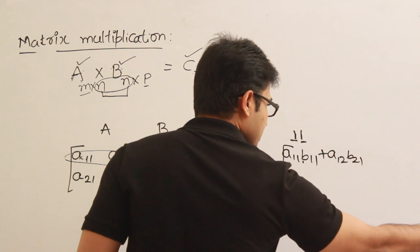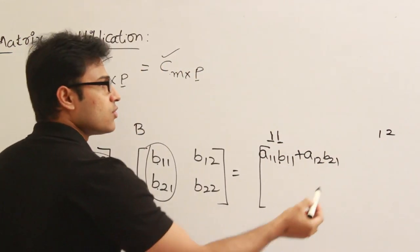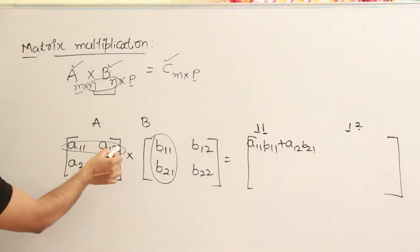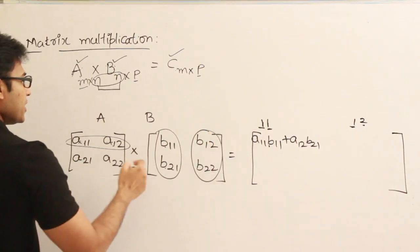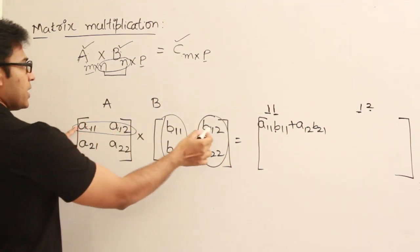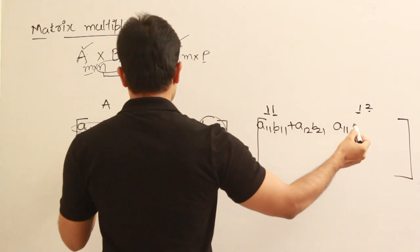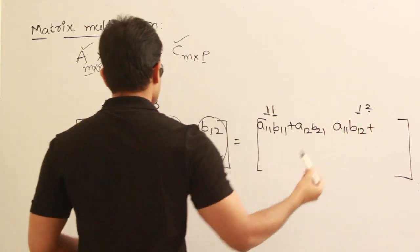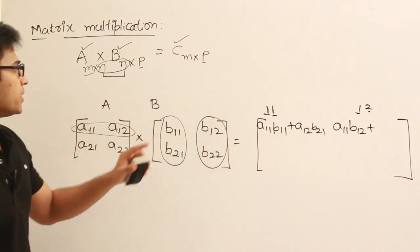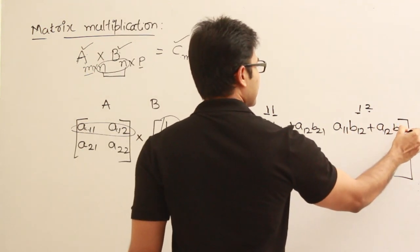For the next element at index 1,2: take the first row from A and the second column from B, multiply the corresponding elements and sum them up. So C12 equals A11·B12 plus A12·B22.